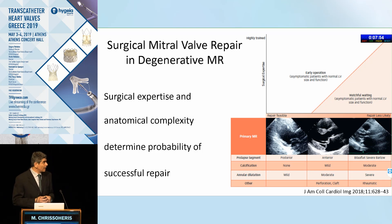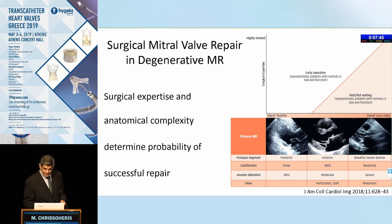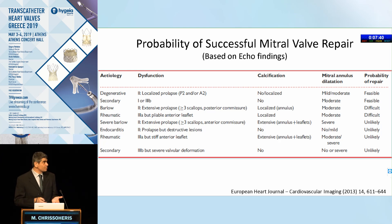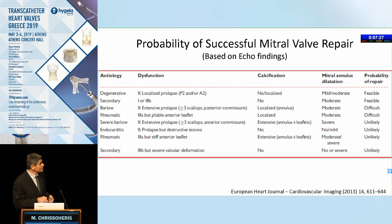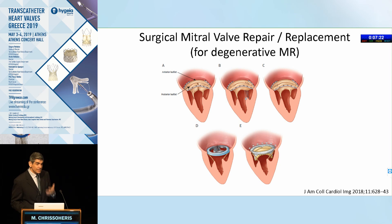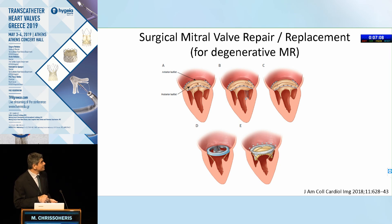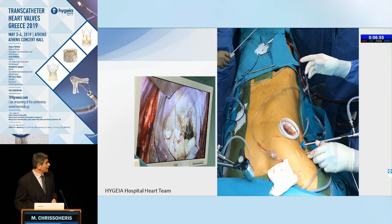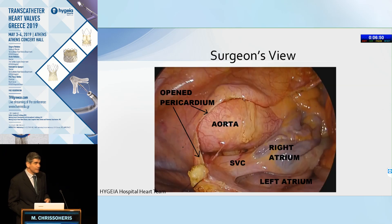For surgical mitral valve repair in degenerative mitral regurgitation, surgical expertise and anatomic complexity define the probability of successful repair. Localized posterior flails are very easy to repair; however, more extensive multi-scallop prolapse, especially involving the anterior commissure or calcification at the annulus level, makes the procedure more difficult. Surgical techniques include resection of the posterior P2 leaflet with sliding plasty, plasty with neo-chords on the anterior or posterior leaflet, commissural plasty for commissural flails, or chordal-sparing mitral valve replacement. All these can be done very nicely with a thoracoscopic approach, which is very beneficial for the patient.